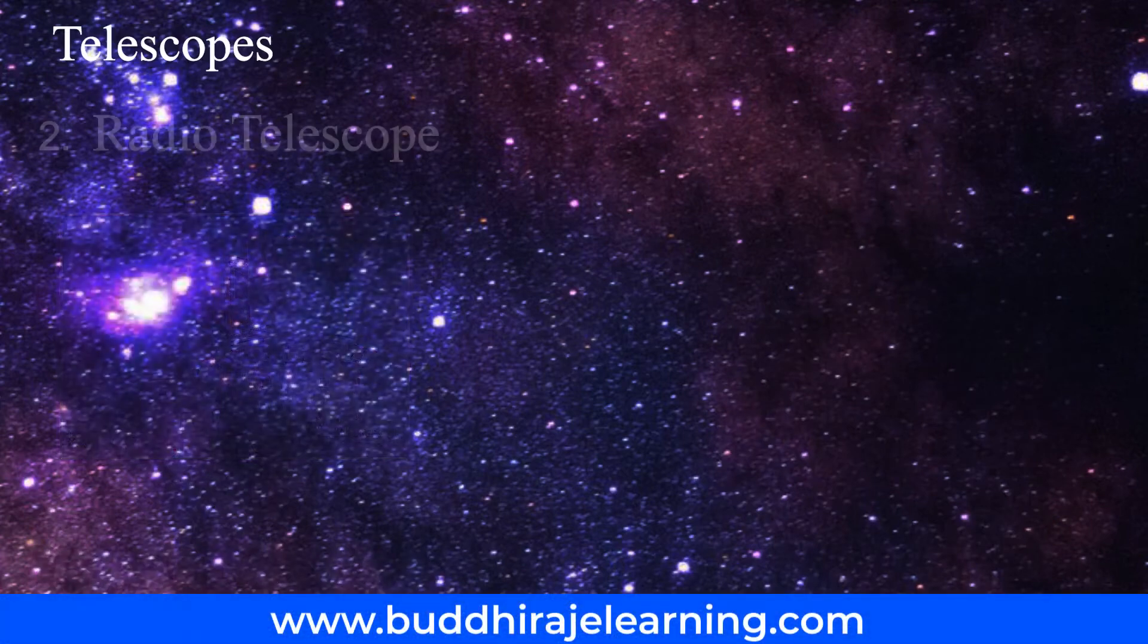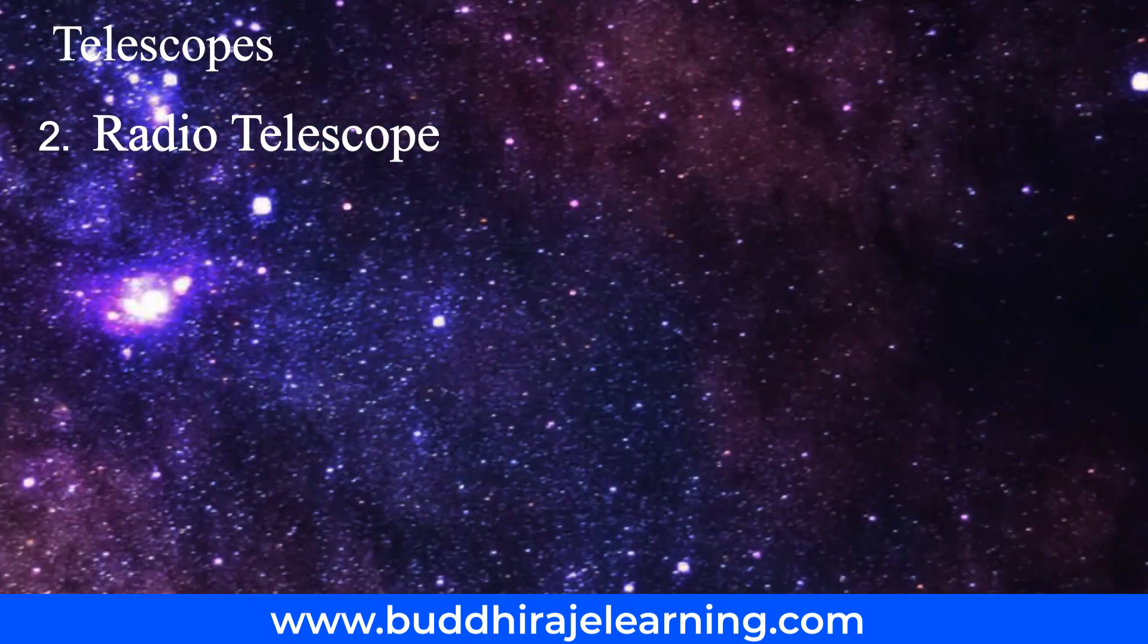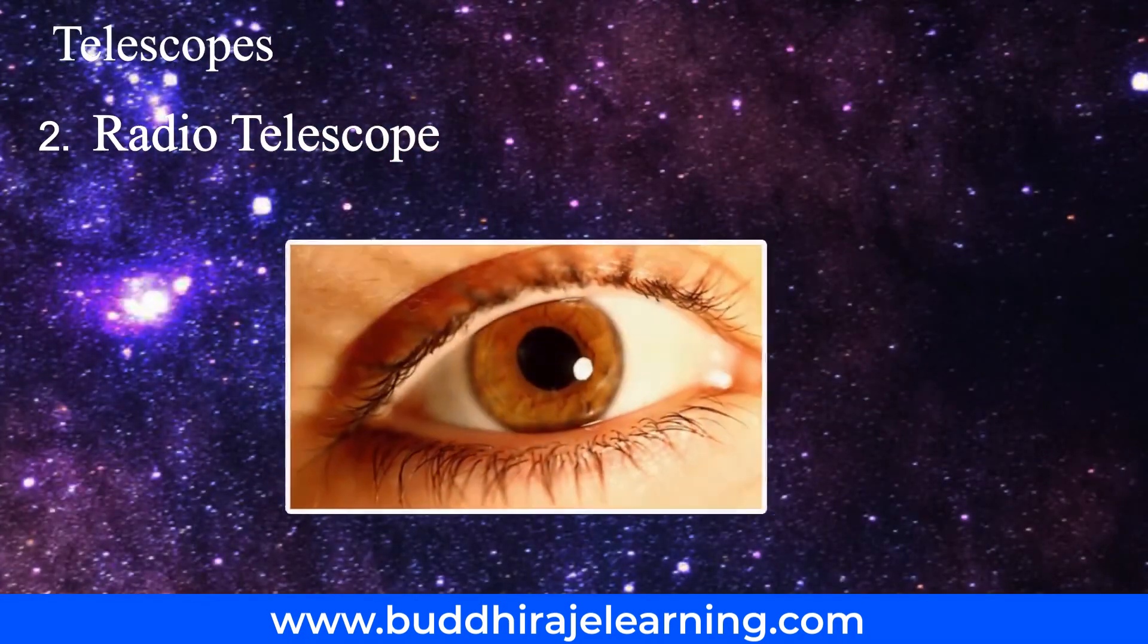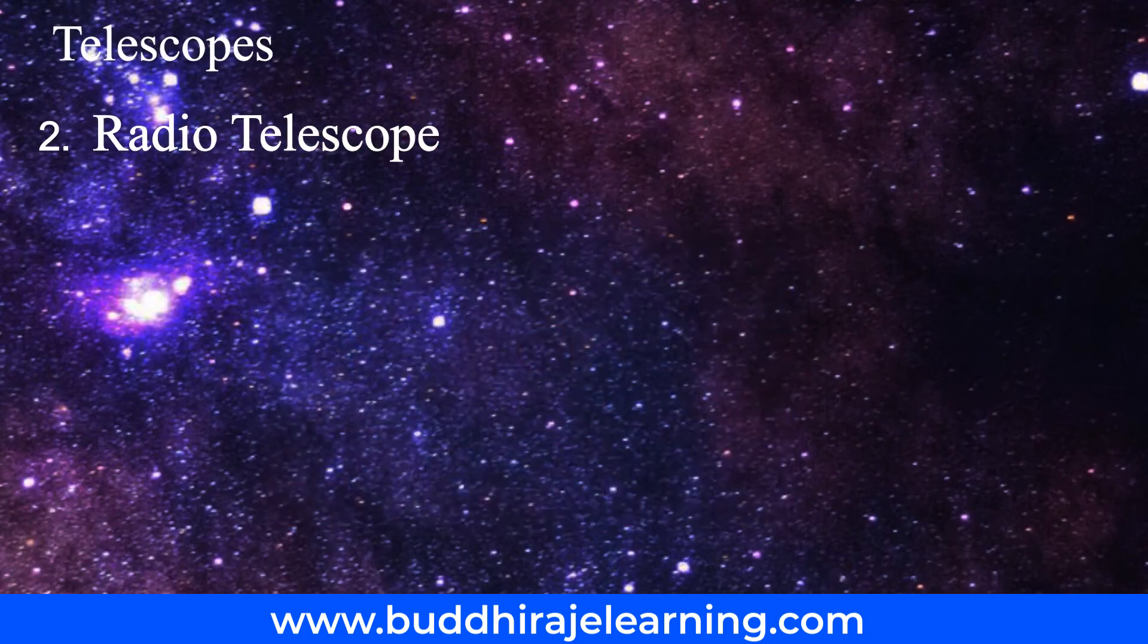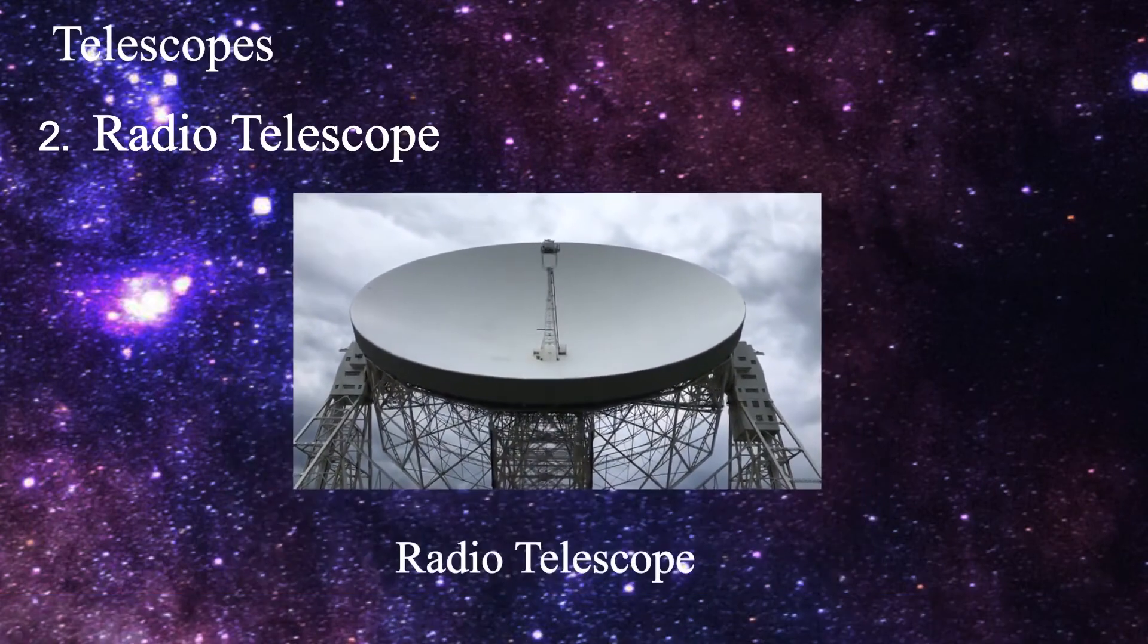Students, let us see the radio telescope. Many heavenly objects emit radio waves in addition to visible radiation. We cannot see this radiation with our eyes. Hence, a special type of telescope is used to receive these rays. It is called a radio telescope.